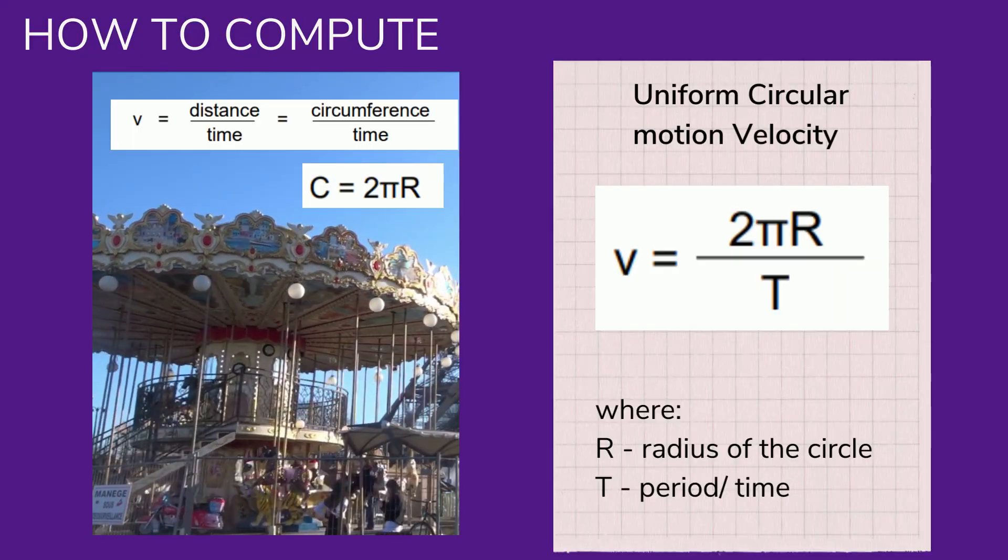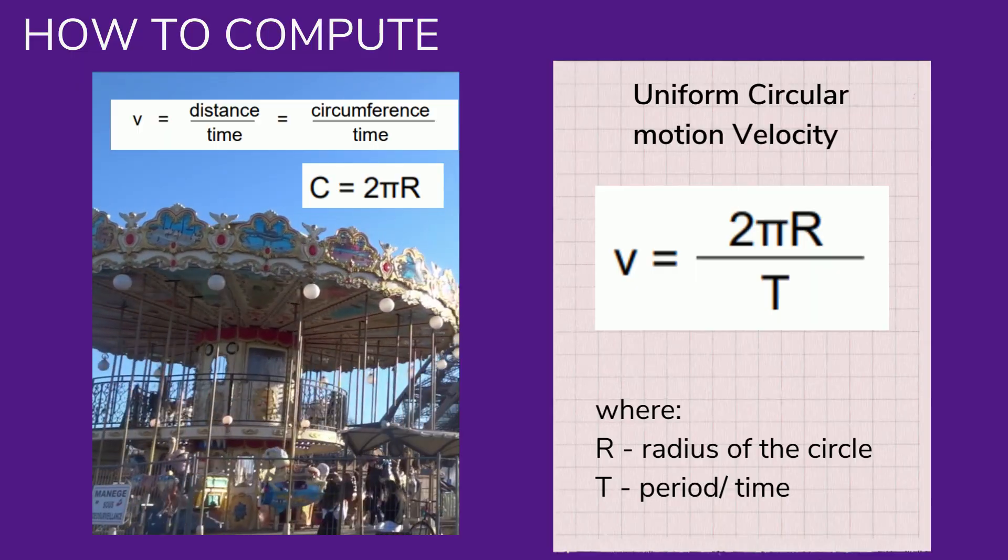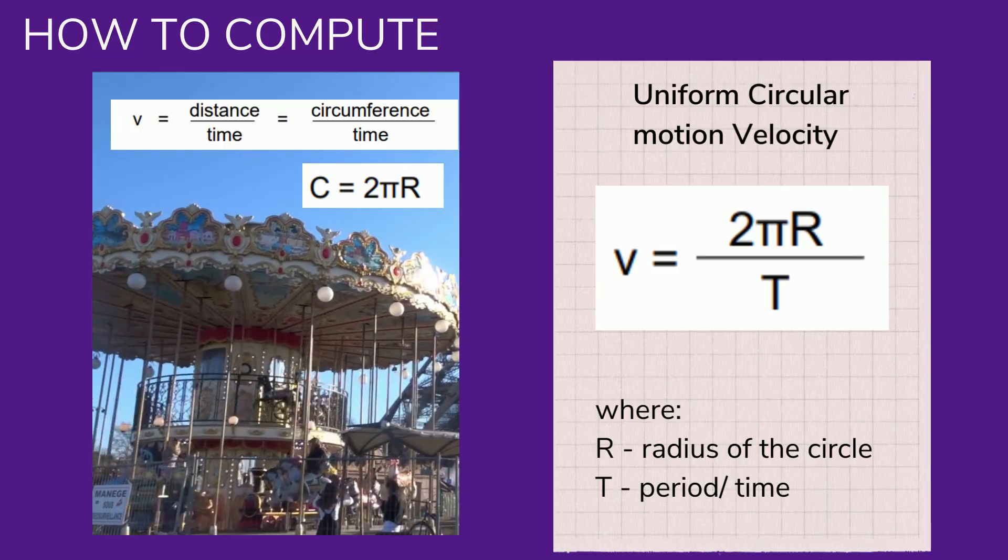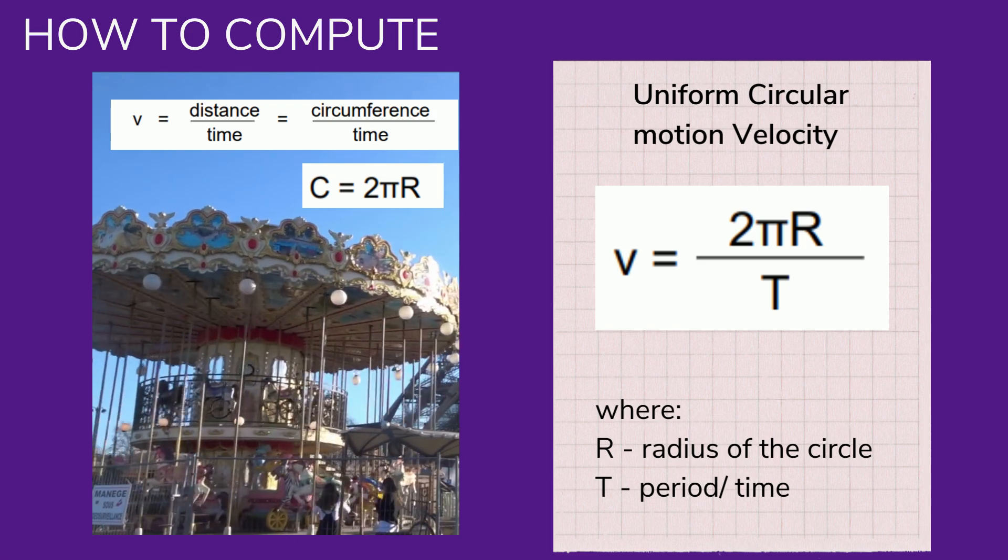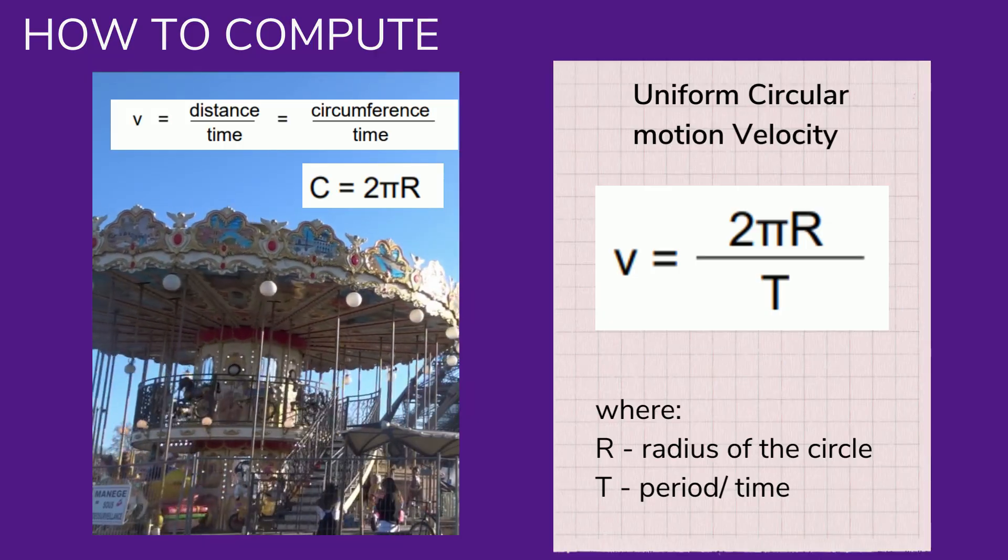The formula for calculating circular velocity is v = 2πR/T, where R is the radius of a circular orbit and T is the time or the period.